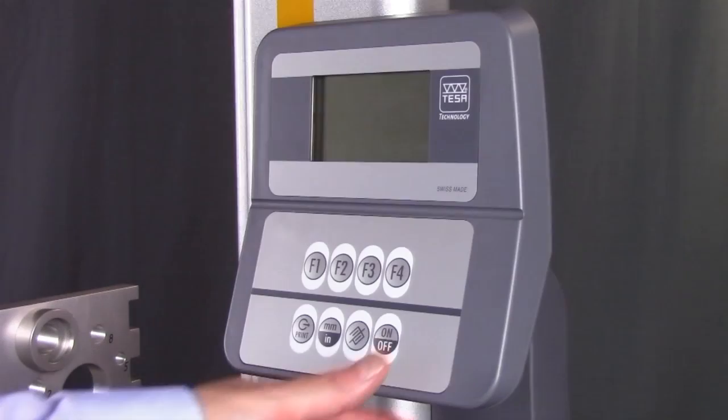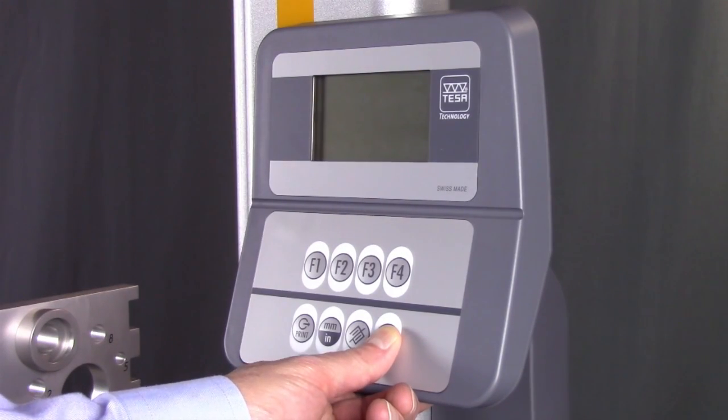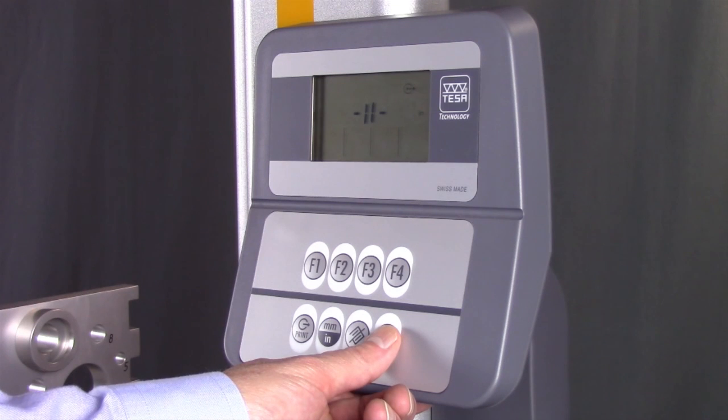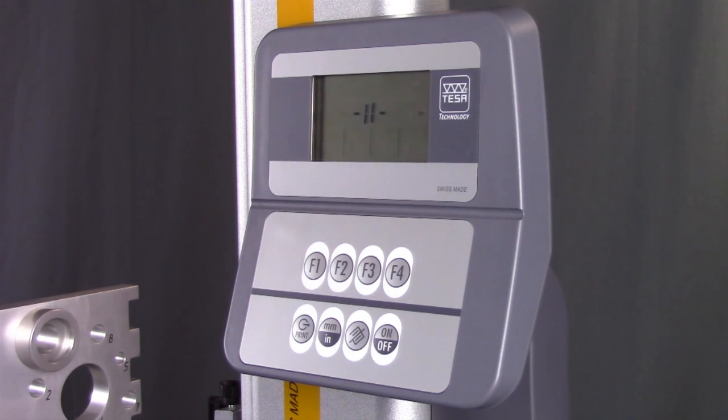Once you've turned the instrument on, a double bar appears on the screen. Step one is to enter the gauge into measuring mode. This clears the scale and prepares the gauge for measuring.